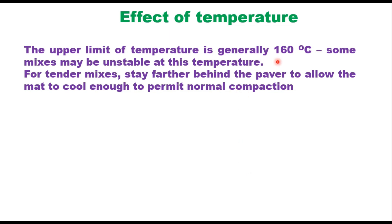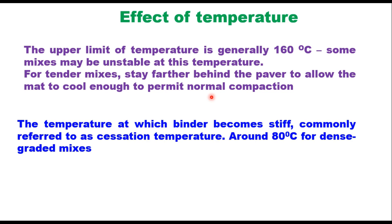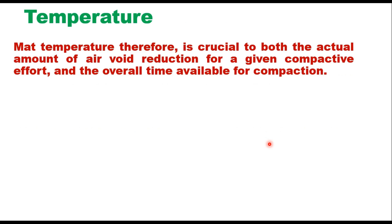The aggregates in the mix lock in position and no more air can be forced out. The upper limit of temperature is generally 160°C; some mixes may become unstable at this temperature. For tender mixes, stay farther behind the paver to allow the mat to cool enough to permit normal compaction. As the mix cools, the asphalt binder eventually becomes stiff enough to effectively prevent any further reduction in air voids regardless of the applied compactive effort. The temperature at which the asphalt binder becomes stiff is commonly referred to as cessation temperature, which is around 80°C for dense graded mixtures. Below this temperature, the roller can still be operated on the mat to improve smoothness and surface texture, but further compaction will not occur. The mat temperature is therefore crucial to both the actual amount of air void reduction for a given compactive effort and the overall time available for compaction.